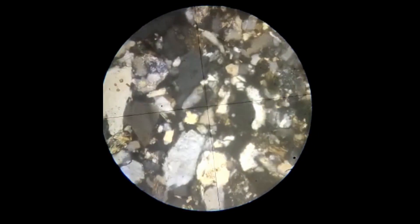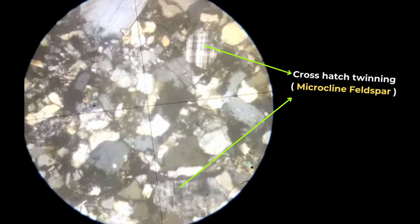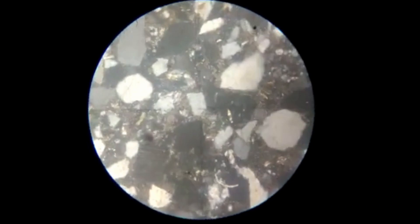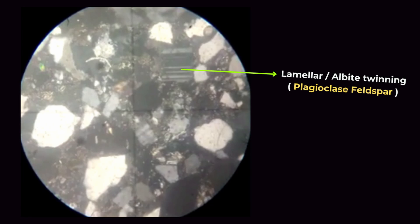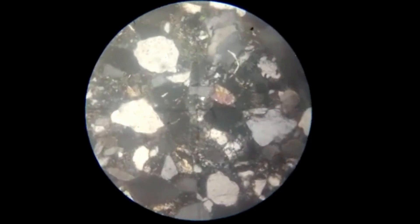If you see cross-grid twinning under cross polars, you can say it is microcline feldspar. If you see lamellar twinning, you can say it is albite. Here you can see albite or lamellar twinning — these parallel lines are called albite twinning, so it is plagioclase feldspar.